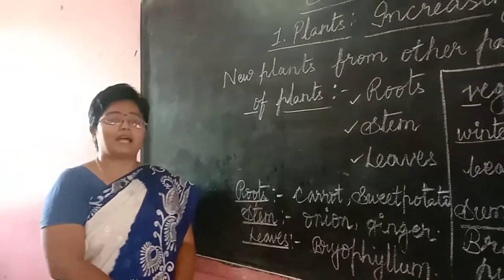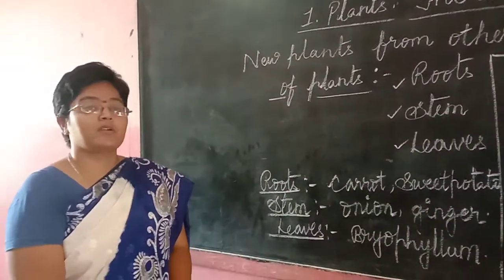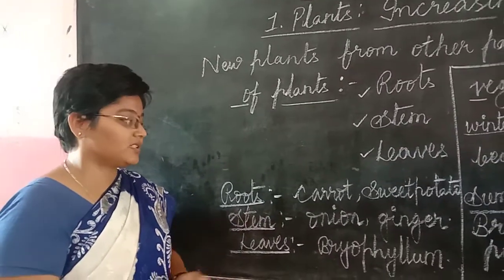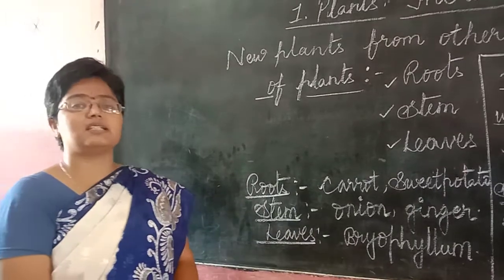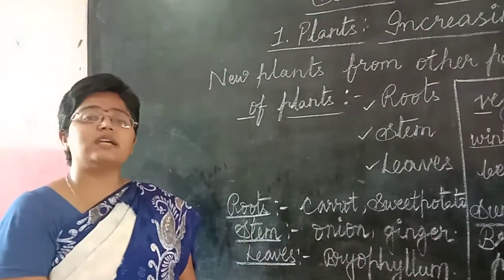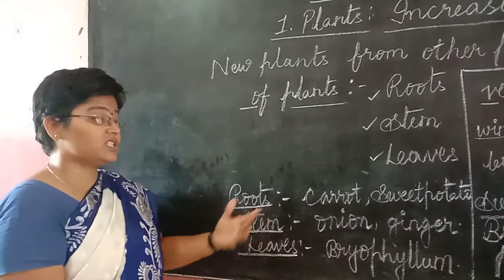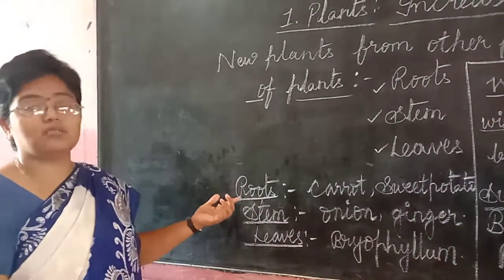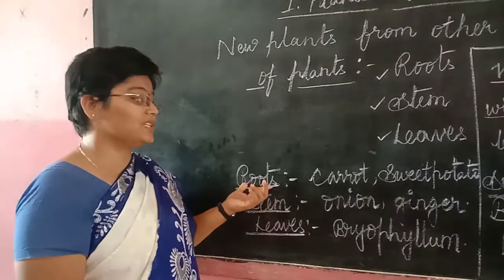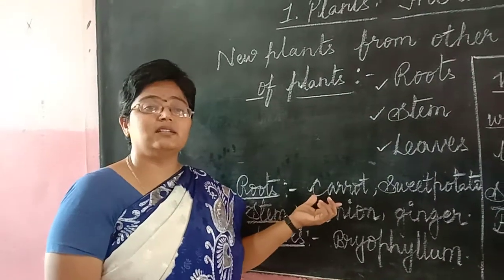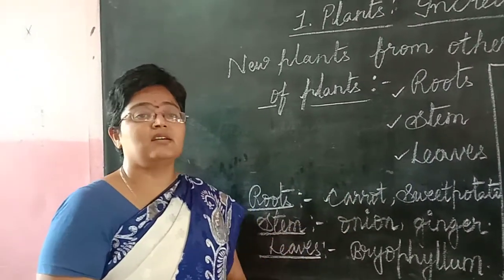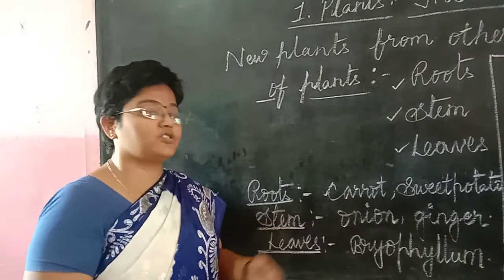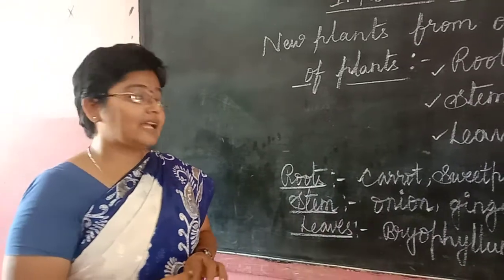Which parts of the plants produce new plants? Roots of the plants can produce new plants. Have you ever thought about where the carrot comes from? Have you ever seen seeds of carrot or seeds of sweet potato? Then how do you get new plants of these? The roots of this plant have to be grown into a new plant. Roots store their food and bulge — they swell out and form as a new part of the plant. A good example of this is carrot as well as sweet potato.